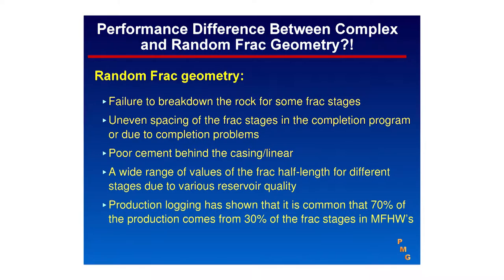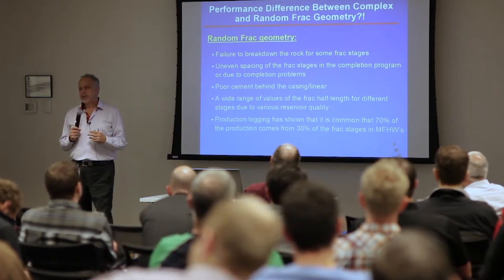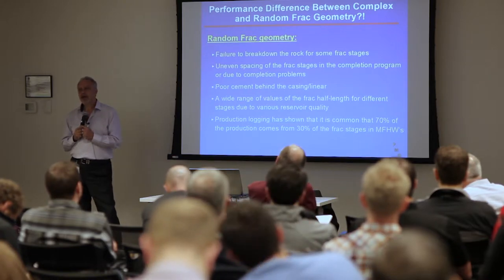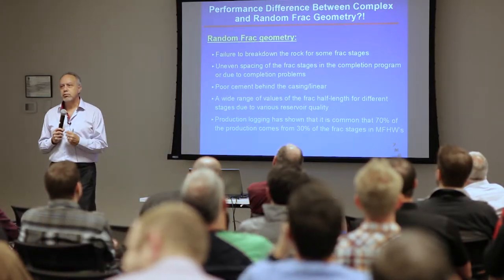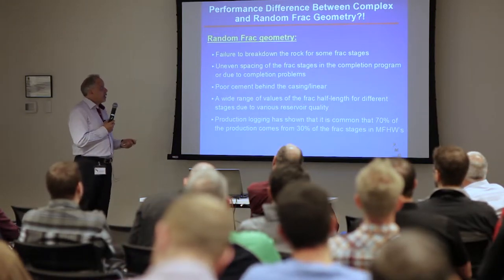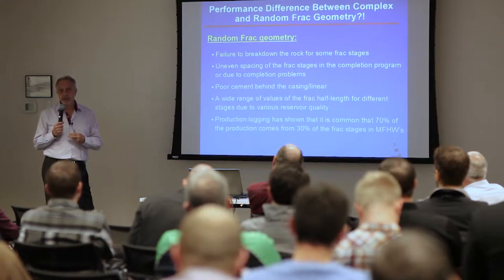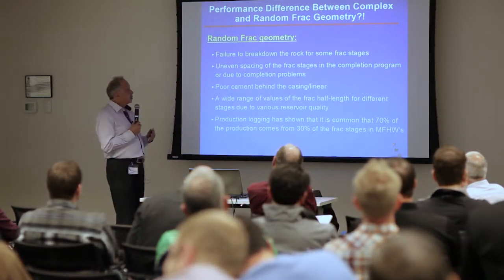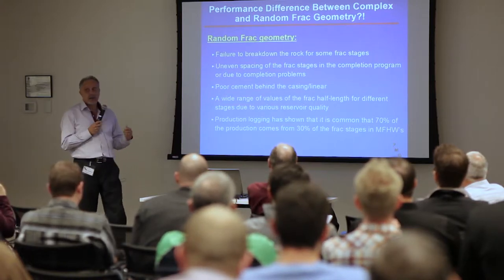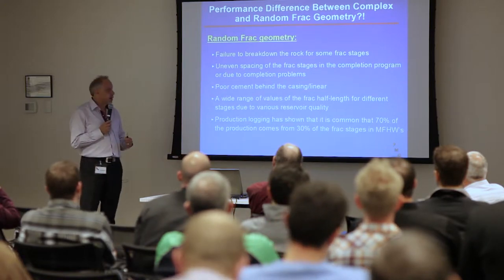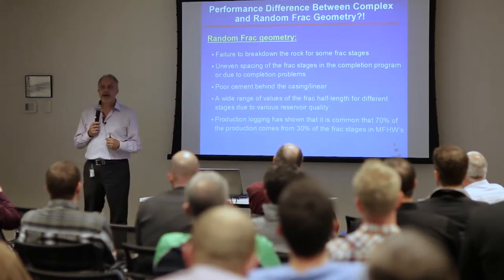How about frack geometry? We engineers like to assume that frack geometry is symmetrical, parallel, with the same frack half-length and conductivity — identical for simplicity. But the reality from micro seismic is different. We don't have a homogeneous reservoir; there are always differences in reservoir quality and rock mechanics that give totally different frack geometry. Sometimes you fail to break down certain stages, leaving an unfracked space. Based on what we've seen, nearly 70% of what you produce comes from 30% of the frack stages, because the frack geometry is so different.